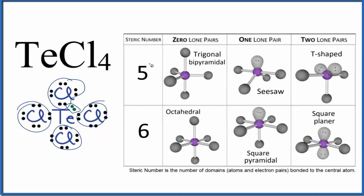So our steric number is five because there are five things attached to the central atom, and we have that one lone pair right here. So one lone pair, steric number of five. This gives us what we call a seesaw molecular geometry.